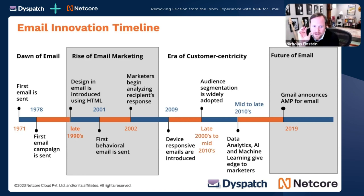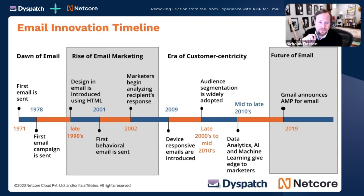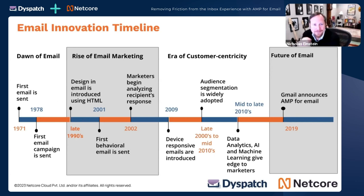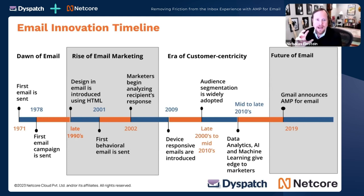Ray Tomlinson hit send for the first time in 1971, sending an email to himself. By 1978, we as email marketers had begun to batch and blast messages out. Email marketing really rose in the late nineties when HTML was introduced, which was a pretty big shift — going from basic text to HTML.